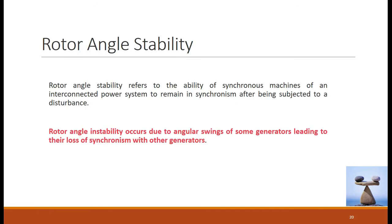First we will take up the rotor angle stability. The rotor angle stability refers to the ability of the synchronous machine — it is concerned with the generator. The rotor angle stability refers to the ability of the synchronous machines of an interconnected power system to remain in synchronism after being subjected to a disturbance. The rotor angle instability occurs due to angular swings of some generators leading to their loss of synchronicity with other generators.